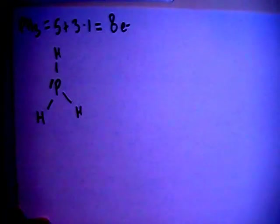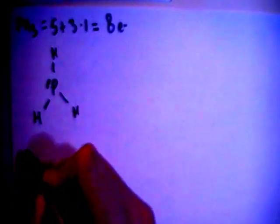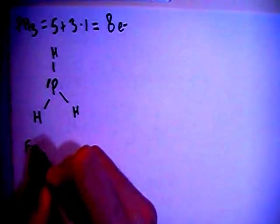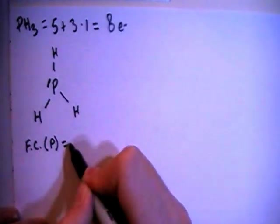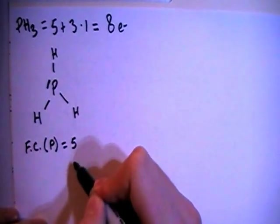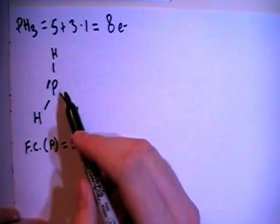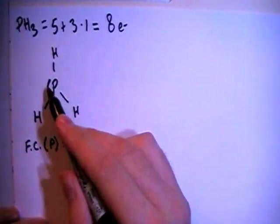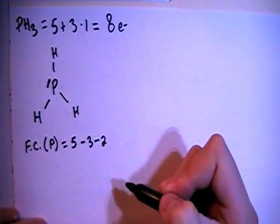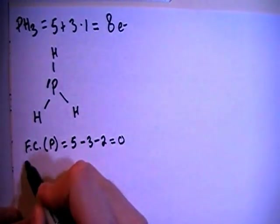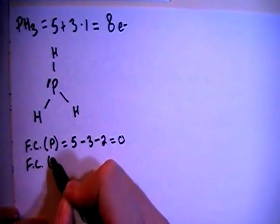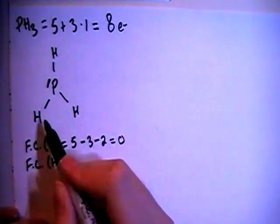Let me go ahead and check that by calculating the formal charges. So the formal charge on the central phosphorus is going to be equal to 5 valence brought in minus 1, 2, 3 bonds minus 1, 2 non-bonding electrons for a formal charge of 0. And then the formal charge on the hydrogen, each one.